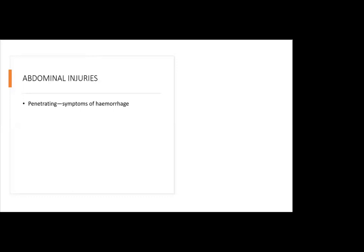Now let's look at abdominal injury — any injury to the abdomen. Abdominal injuries can present as a penetrating injury, where there will be symptoms of bleeding and possible involvement of the small or large bowels. It could also be a blunt injury, caused by impact with a dull object. So we can have either penetrating abdominal injury or blunt abdominal injury.